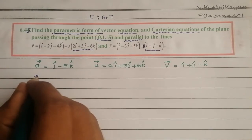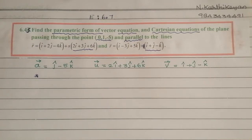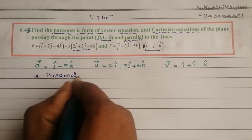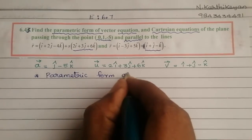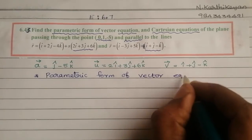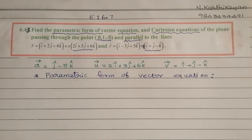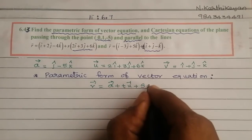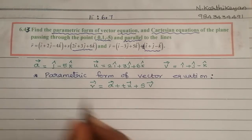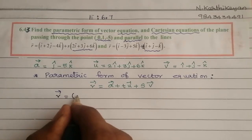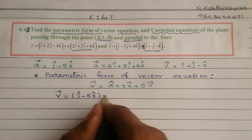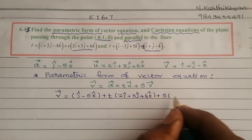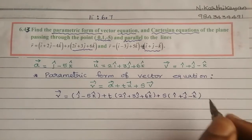First, the parametric form of vector equation. The formula is: r vector equal to a vector plus t into u vector plus s into v vector. That is, r vector equal to (j cap minus 5k cap) plus t into (2i cap plus 3j cap plus 6k cap) plus s into (i cap plus j cap minus k cap).